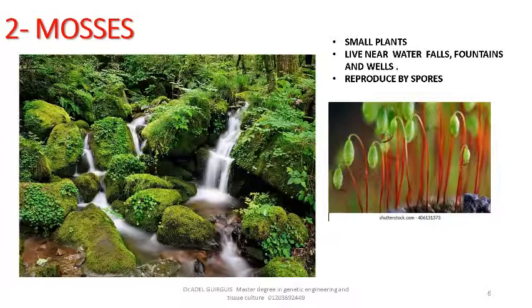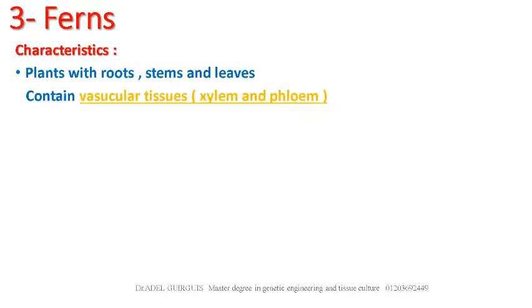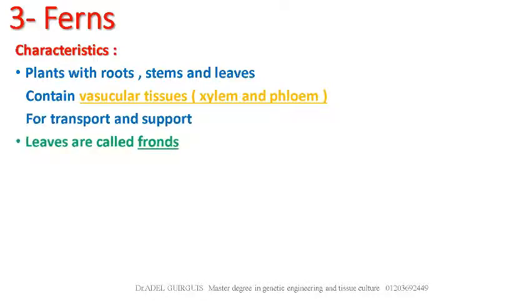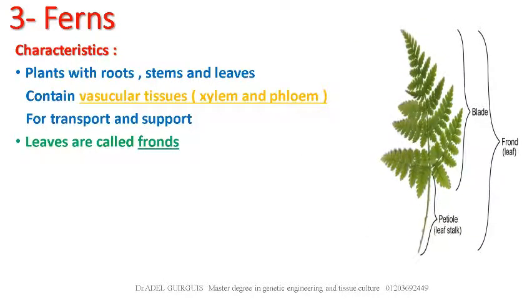Number 3: Ferns. Characteristics: plants with roots, stems, and leaves. They contain vascular tissues — xylem and phloem — for transport and support. Their leaves are called fronds. They do not produce flowers and reproduce by spores.